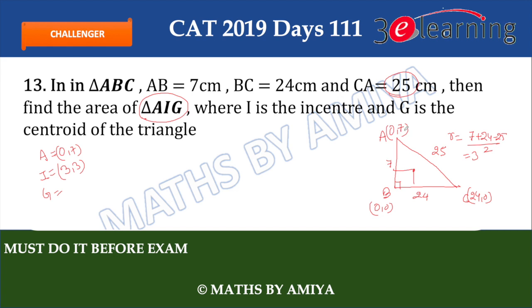G is the centroid — the average of the vertices. X-coordinate: (0 + 0 + 24) / 3 = 8. Y-coordinate: (7 + 0 + 0) / 3 = 7/3. So G = (8, 7/3). Now we have the coordinates of A = (0, 7), I = (3, 3), and G = (8, 7/3).